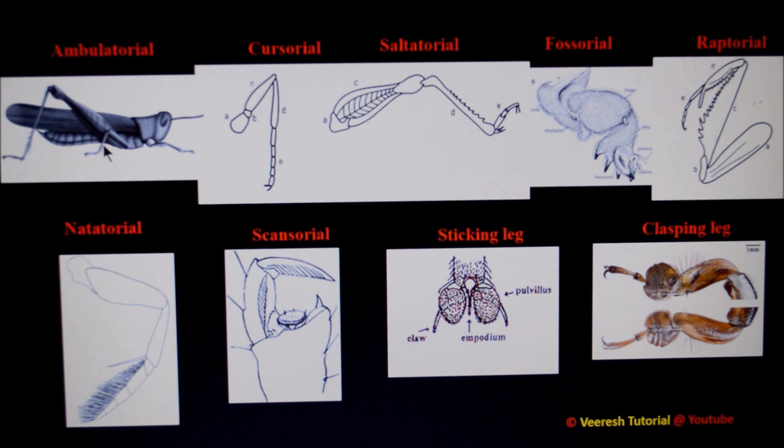The next type is cursorial legs, present in cockroaches. In cockroaches, all three pairs of legs are suited for running purpose. Here, the femur is not so swollen.